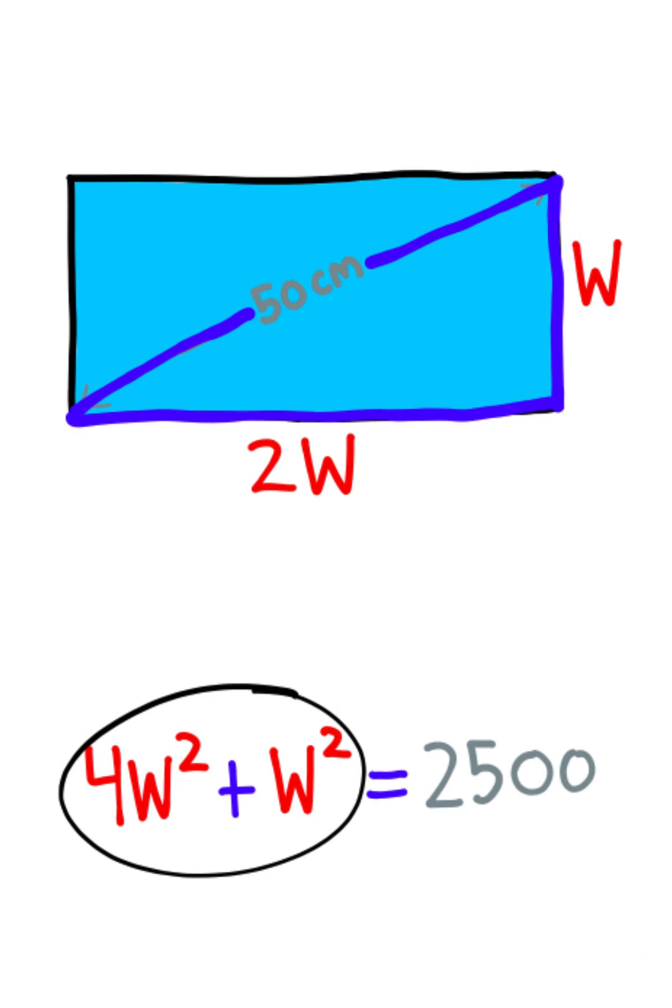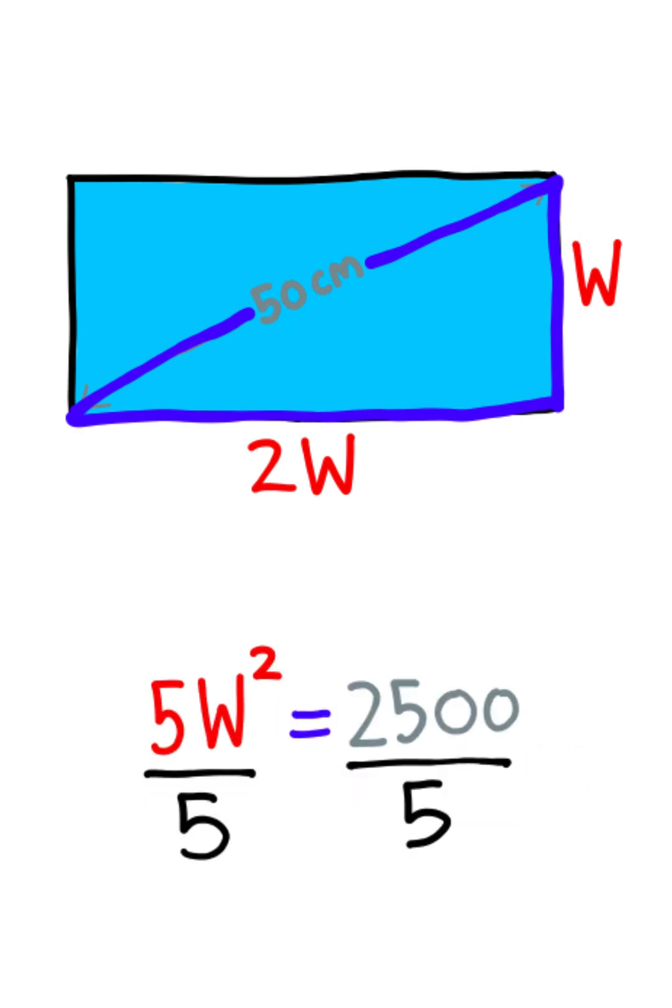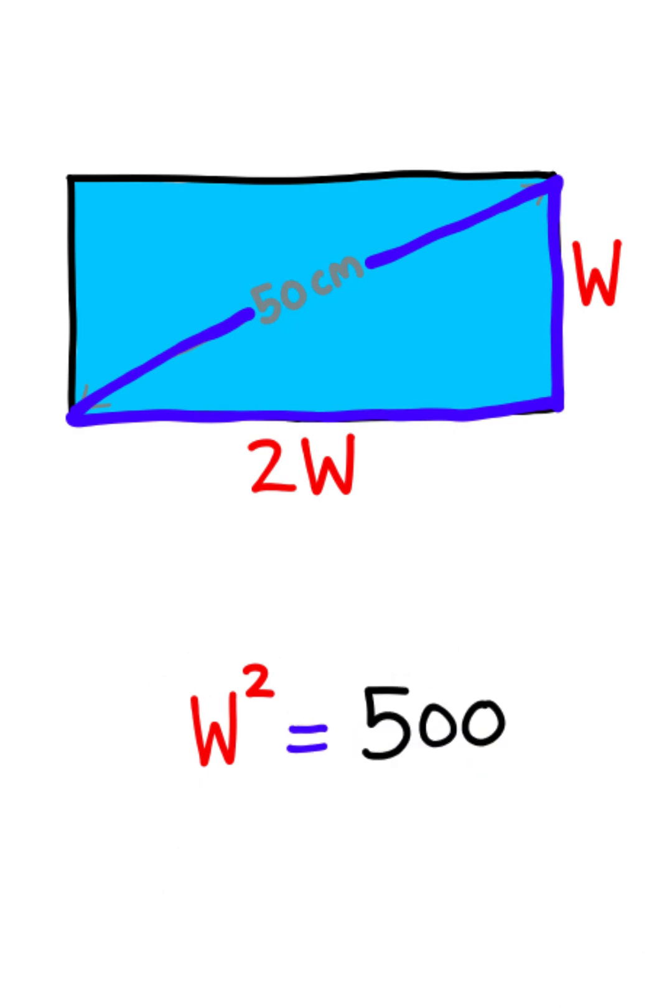I can add the like terms on the left, which gives me 5w squared equals 2500. I can divide the 5 on both sides, and 2500 divided by 5 is 500.